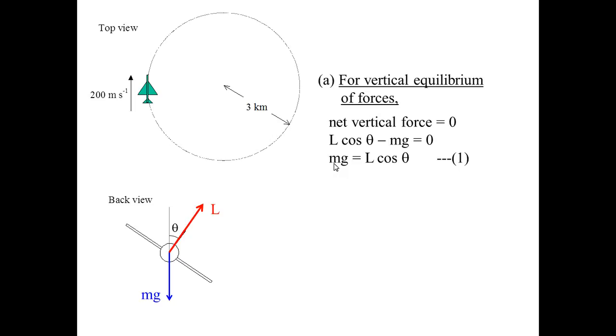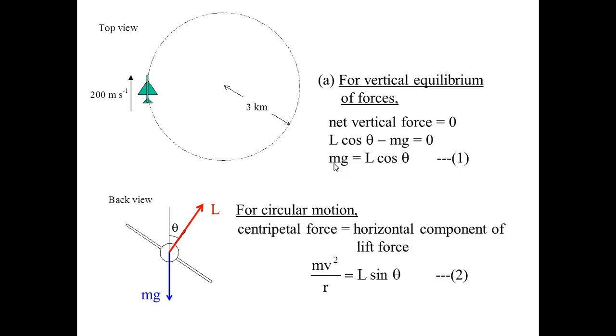We need another equation. The other equation would be the horizontal force. For circular motion, there must be a resultant force. The centripetal force here must equal the horizontal component of the lift force. The horizontal component of the lift force actually provides the resultant force.